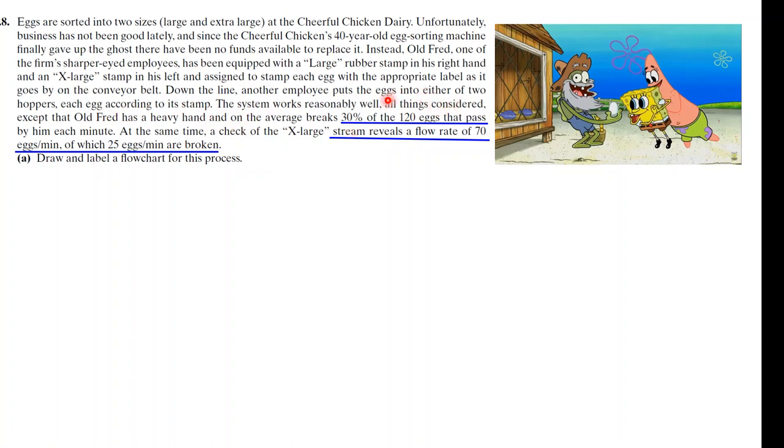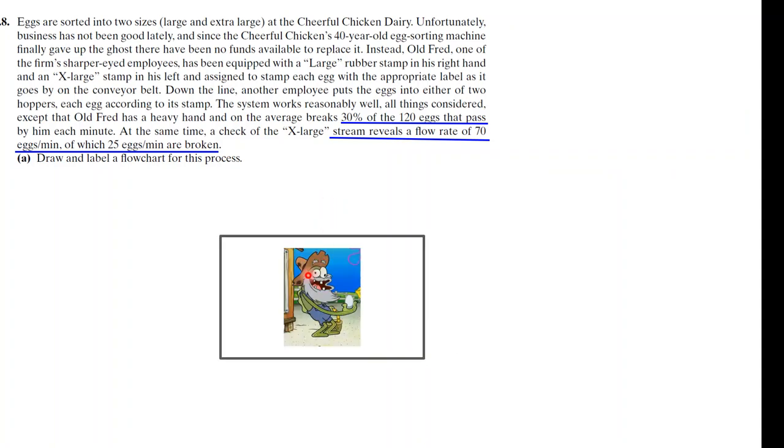So he breaks 30% of the eggs that pass by him, and then the extra large ones, there's 70 eggs per minute approximately, and 25 of them are broken on average. You're gonna start with the box. If you want, you can put Fred right there in the middle of the box because he's kind of like the new sorting machine.